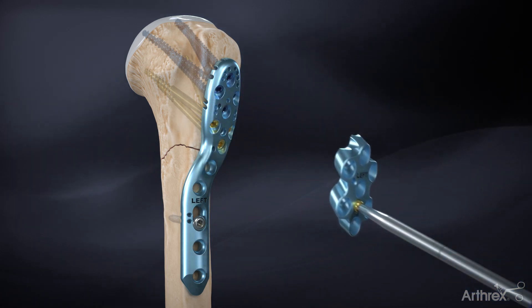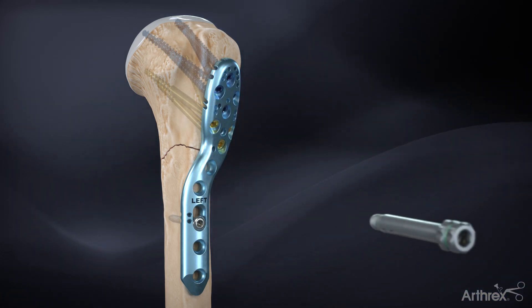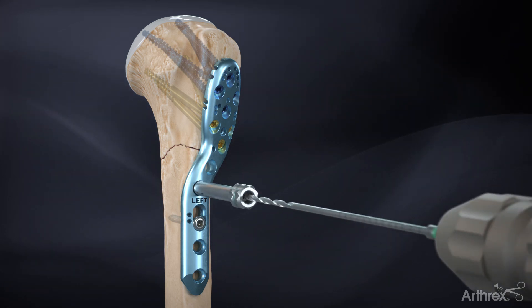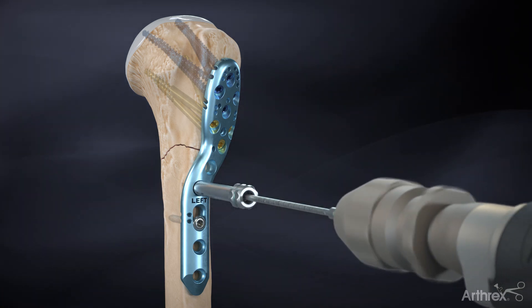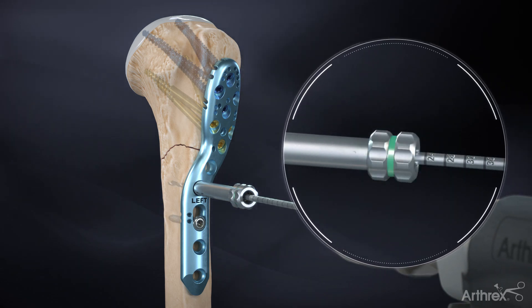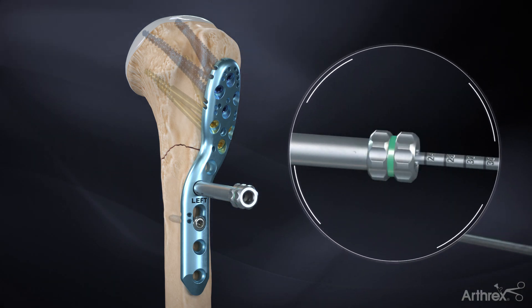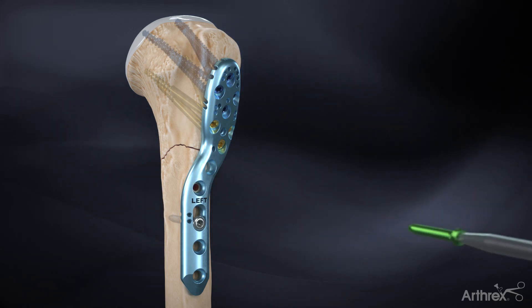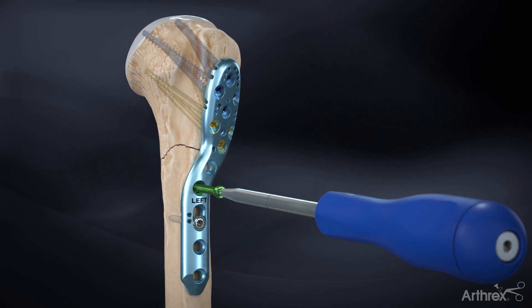For the distal holes, begin by threading the 2.5 millimeter locking drill tower into the screw hole. Drill bicortically using the 2.5 millimeter drill and use the calibration lines in the drill bit to determine screw depth. Unthread and remove the locking drill tower and insert a 3.5 millimeter locking screw using the hex driver.